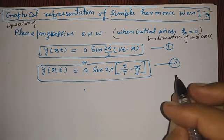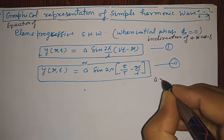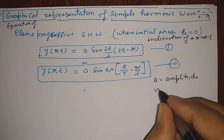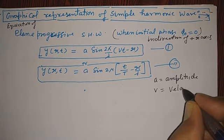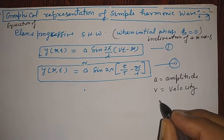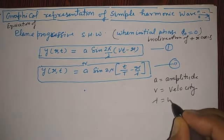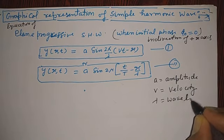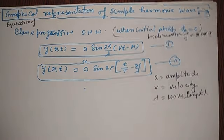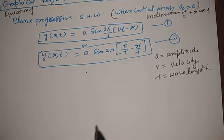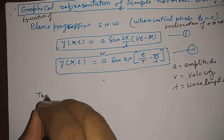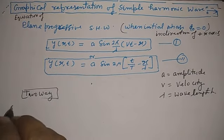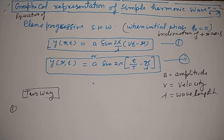Where symbols have their usual meaning: A is equal to amplitude of wave, v is velocity of wave, and λ is equal to wavelength. Now this graphical representation we will see in two ways. In the first way we will see the time-displacement graph.